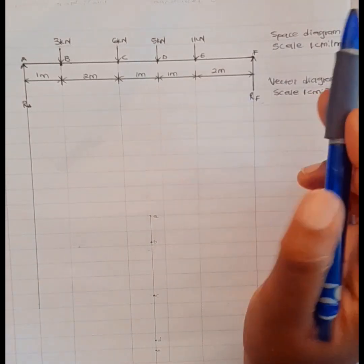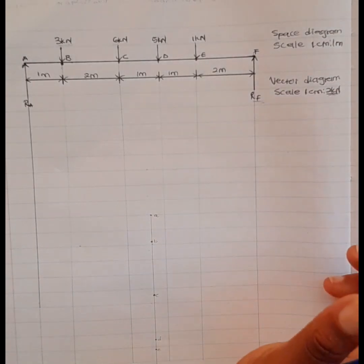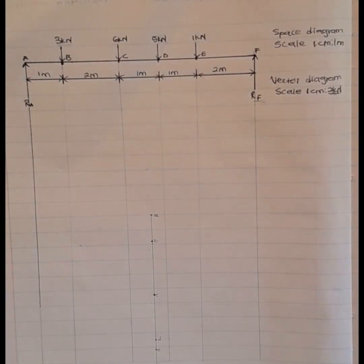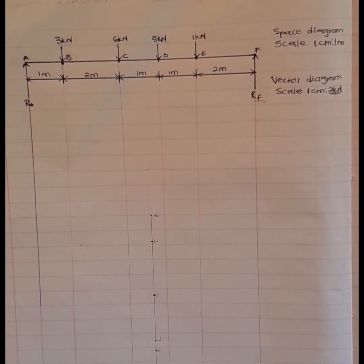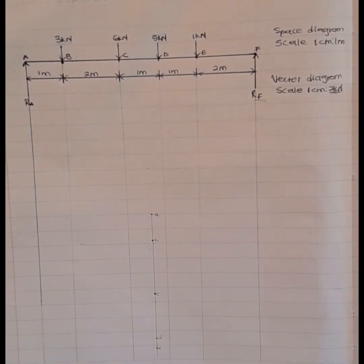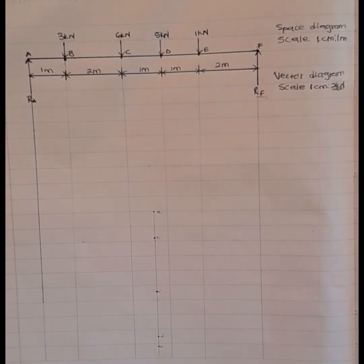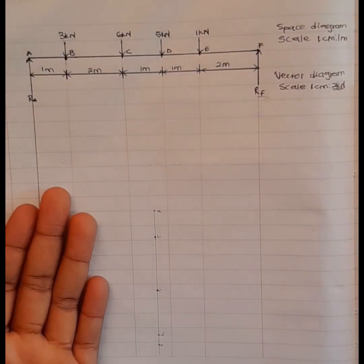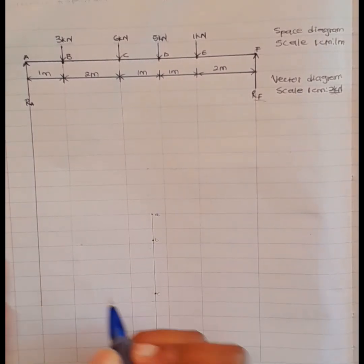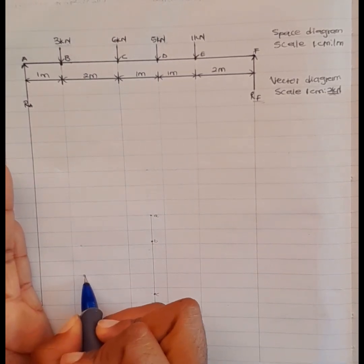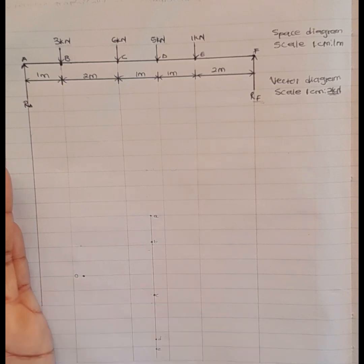For point F, it is impossible to plot it yet because we don't have its magnitude. What we are going to do is find an origin point. I'll create a point anywhere on the side and that point will be my point O — that's my origin.